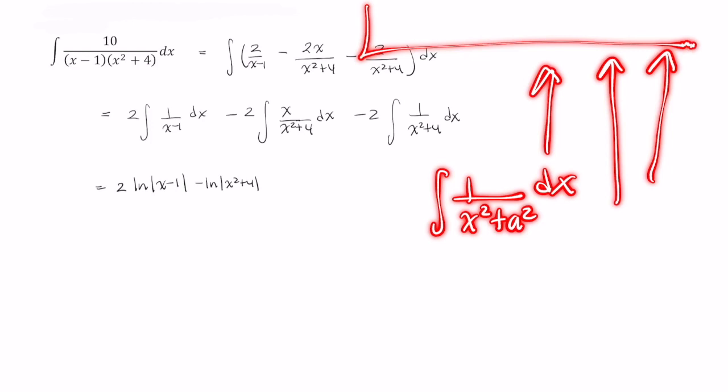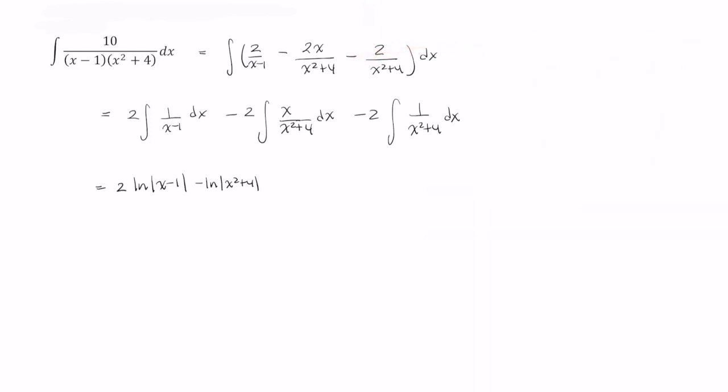Otherwise, just follow along if you already know how this integrates. So this one becomes negative tangent inverse of x over 2, and then finally plus our constant c. So this rational function integrates to this expression here.